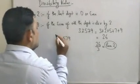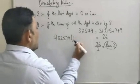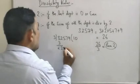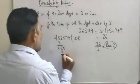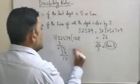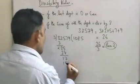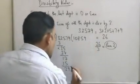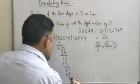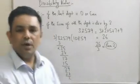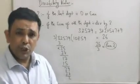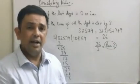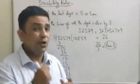Let's verify: 32579 divided by 3. 3 into 3 is 1, then 0, then 25 — 3 eights are 24 — then 17 — 3 fives are 15 — then 29 — 3 nines are 27, remainder 2. We are absolutely sure that the divisibility rule also gives us the remainder.